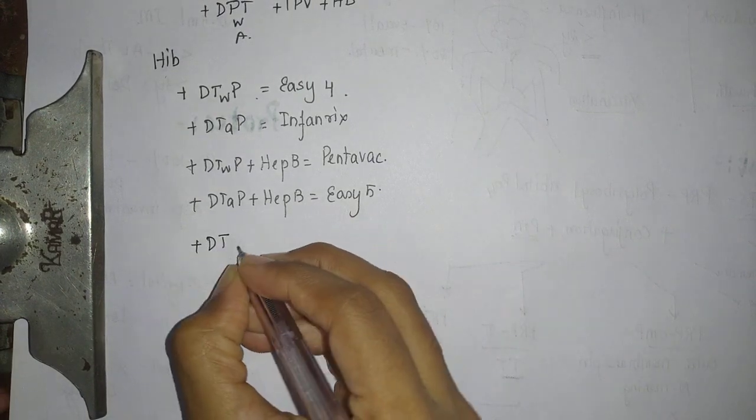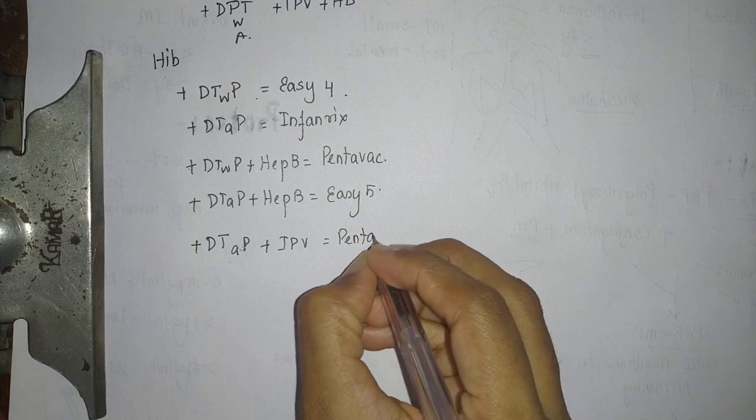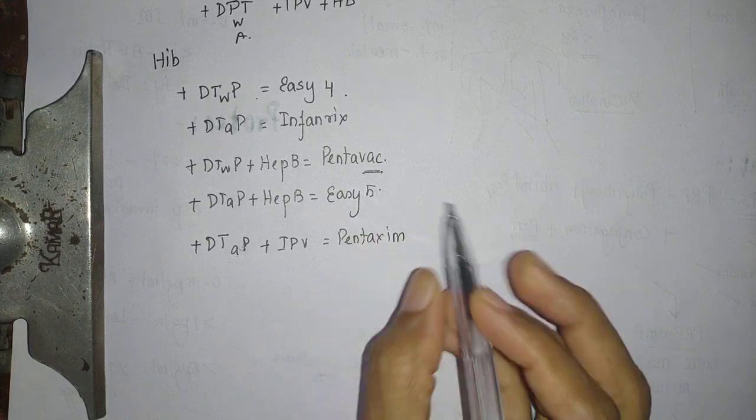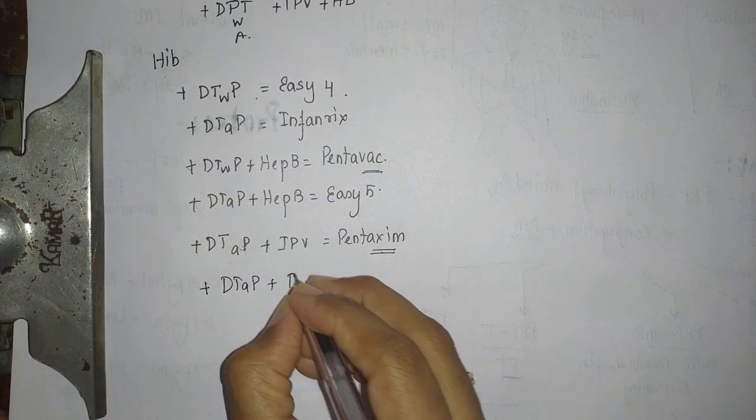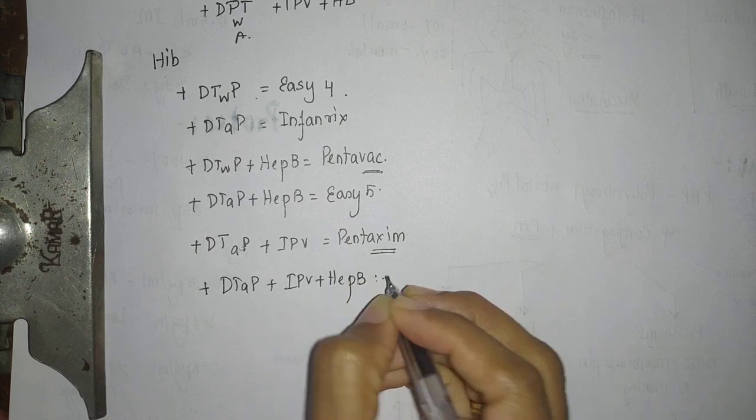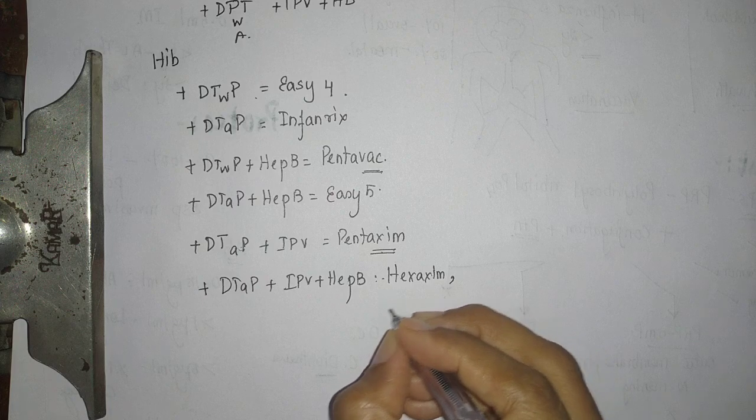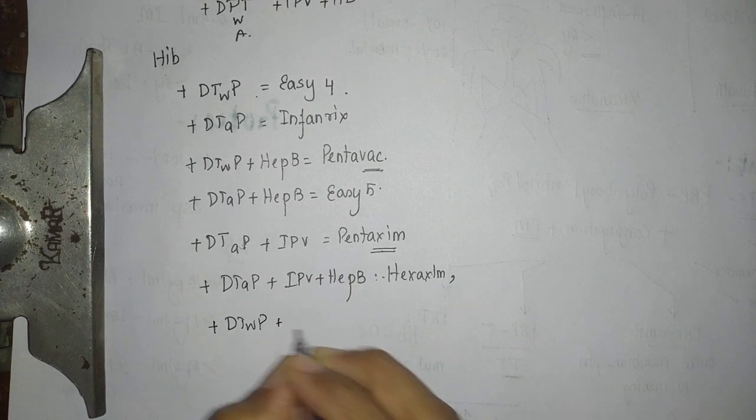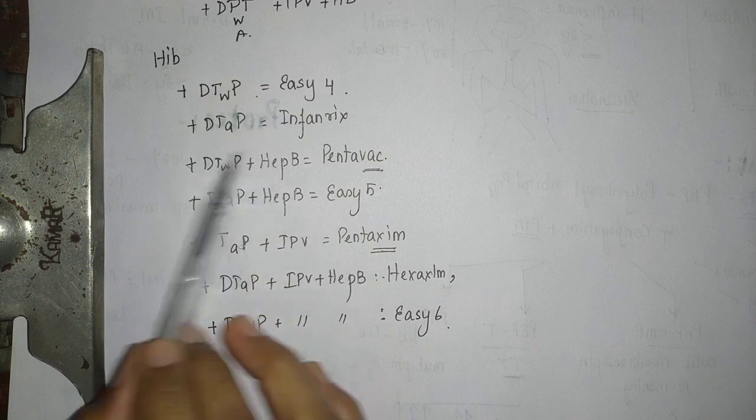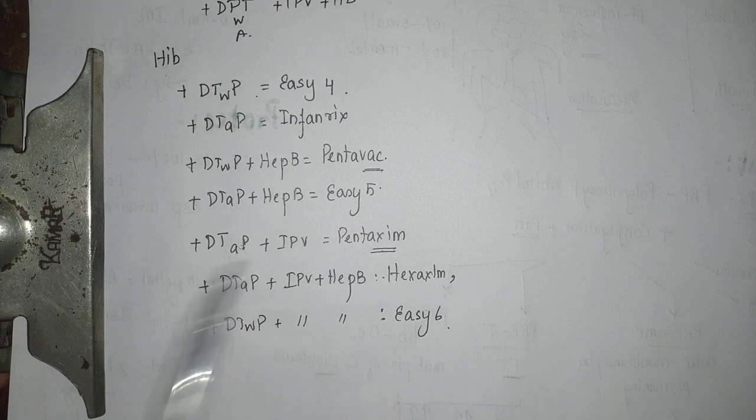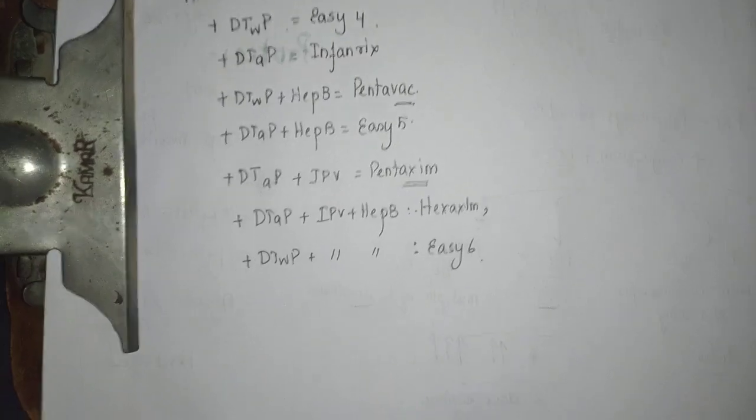If it is available with acellular pertussis and IPV, then it is Pentaxim. Note that this is PentaVac, this is Pentaxim. If it is available with acellular pertussis, IPV, and hepatitis B, it is protecting against six things, it is Hexaxin and Infanrix Hexa. If it is available with whole cell pertussis plus IPV plus hepatitis B, then it is EC6. You may not need to write this in your exams, but you need to know for your practice and for your OSCEs and vivas.